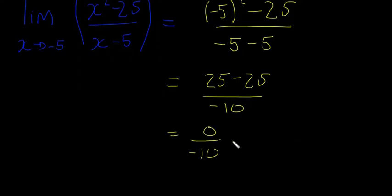That will give us 0 divided by minus 10. 0 divided by minus 10 we can do, is equal to 0. So 0 is our answer here and that's perfectly okay. That means that as x approaches minus 5 this thing will approach 0.